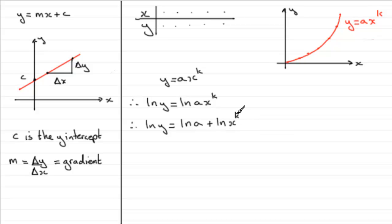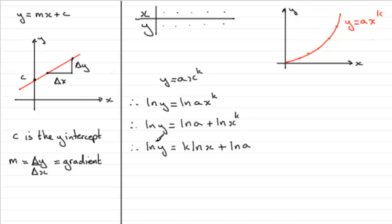When we have a power, we can bring it out to the front. So we get: natural log of y equals k times the natural log of x, plus the natural log of a. Now x and y vary, so the natural log of x and the natural log of y will also vary. But a and k are constants, so the natural log of a is a constant and k remains a constant. We have something of the form y equals mx plus c.